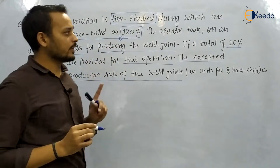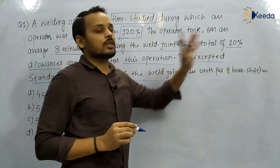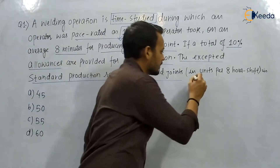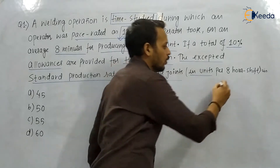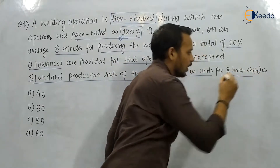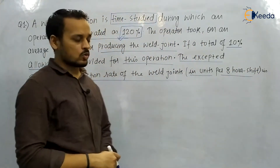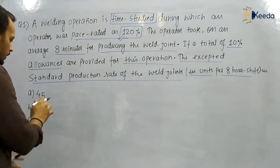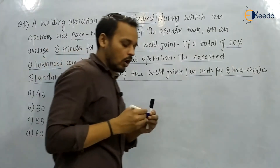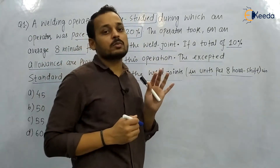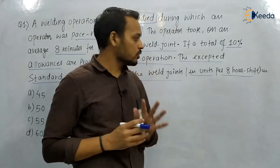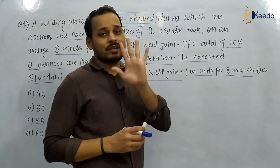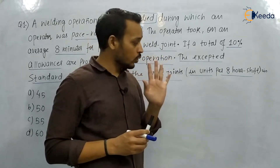So performance rating is given, observed time is given, and allowance is given. They are asking the standard production rate in units when working for an eight-hour shift. Options given are 45, 50, 55, and 60 units. Basically, they are asking how many units will be produced if they are working for eight hours in a day or in a shift.